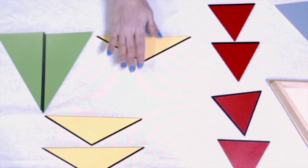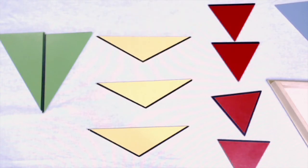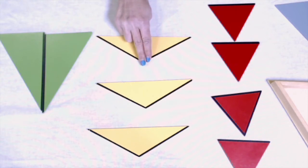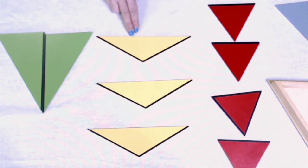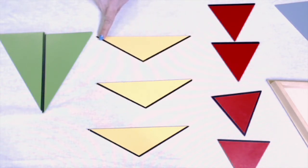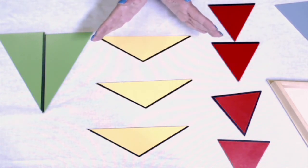I have one, two, three Isosceles Triangles. Isosceles Triangles have two equal sides and one longer side, and they have one, two equal angles and one larger, wider angle.